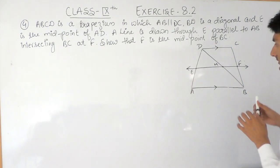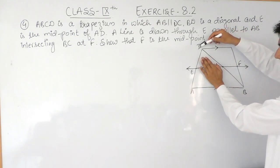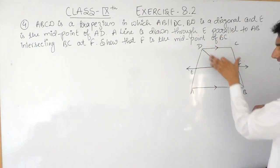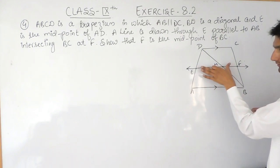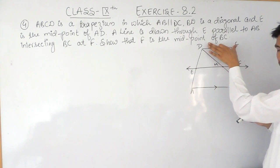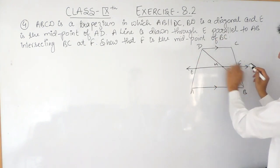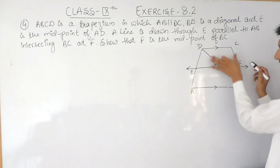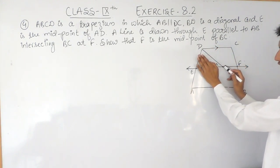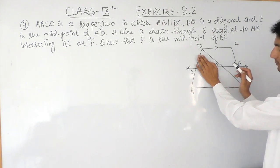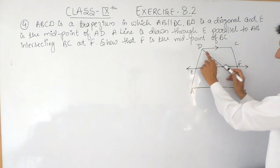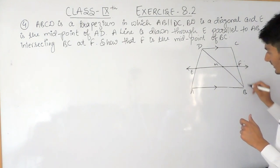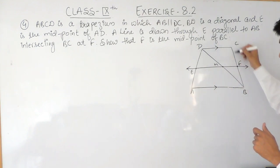After that, in triangle DBC, this line EF is parallel to AB, and AB is parallel to DC, so EF must also be parallel to DC. In triangle DBC, this complete line is parallel to DC. According to the inverse of the midpoint theorem, from the midpoint of one side, drawing a line parallel to the second side means it must bisect the third side. So by that we can say that F is the midpoint of BC.